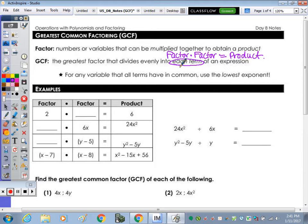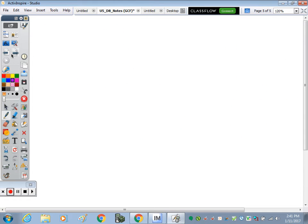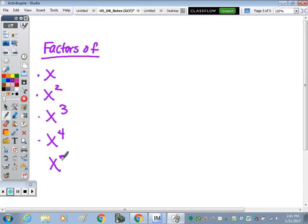So first, I want to talk about, so I want to go to a separate slide. And if you want to put this on your index card, you can. I want to talk about the factors algebraically. So let's look at the factors of x, x squared, x cubed, x to the 4th, and x to the 5th.